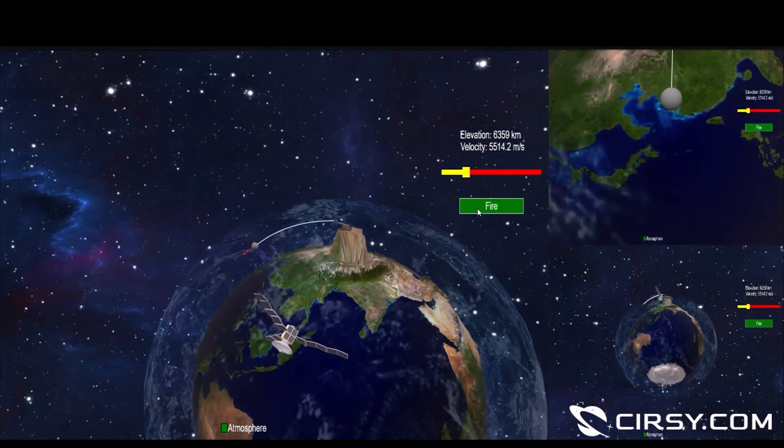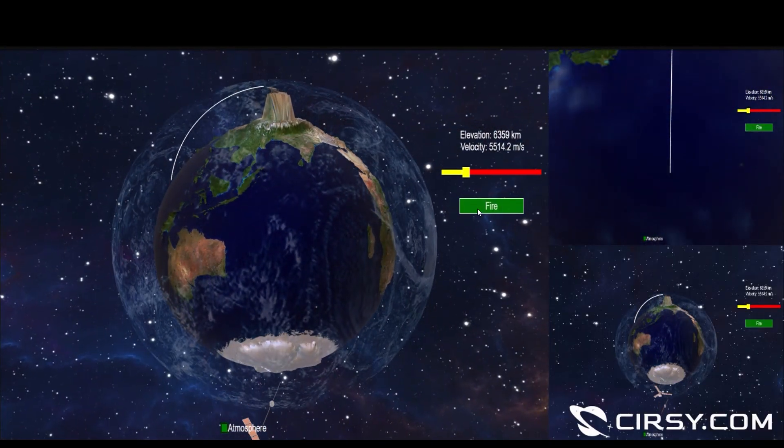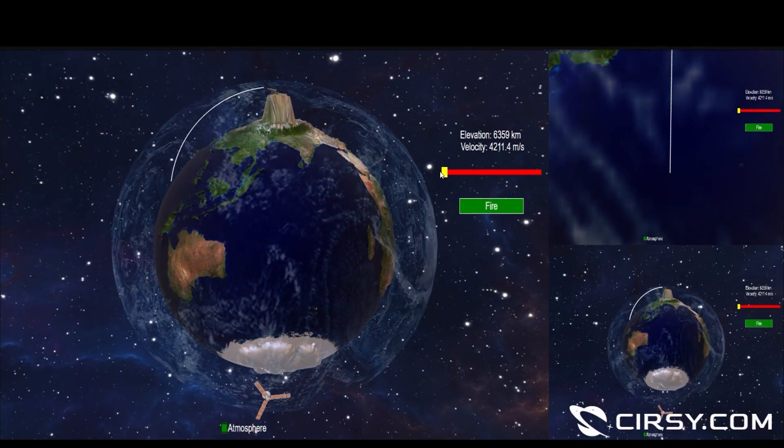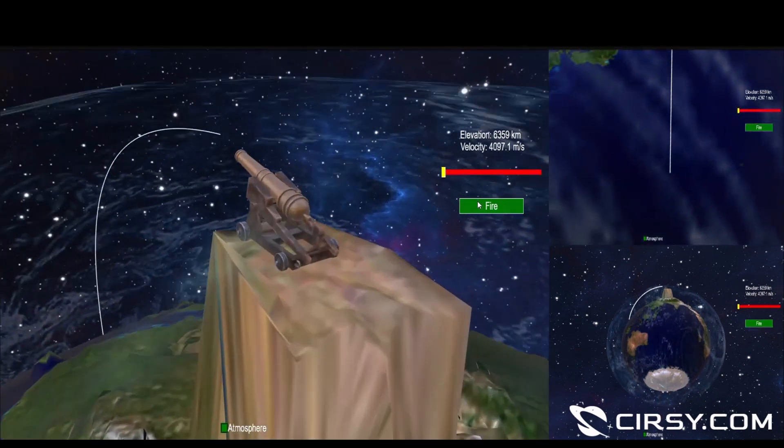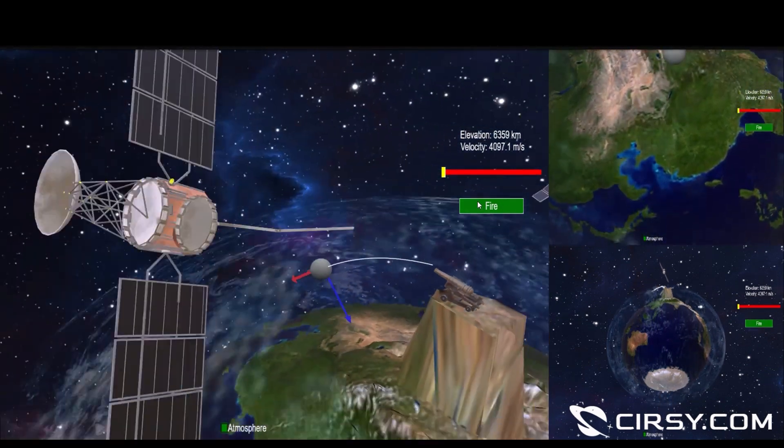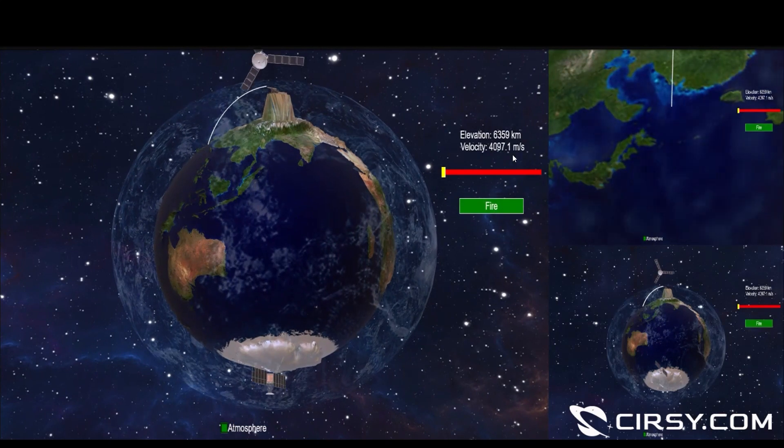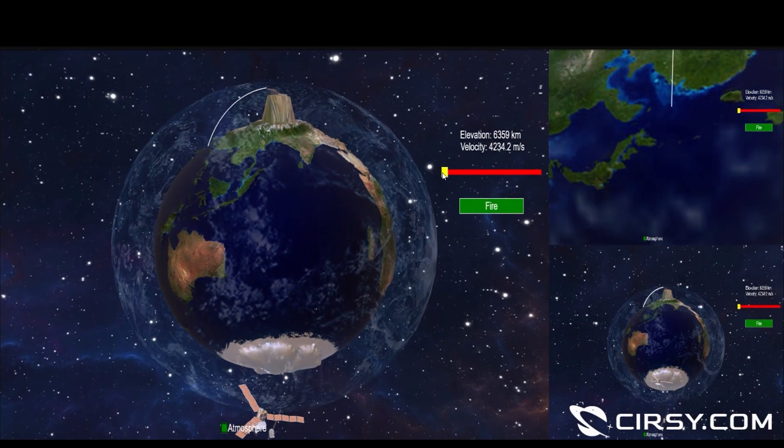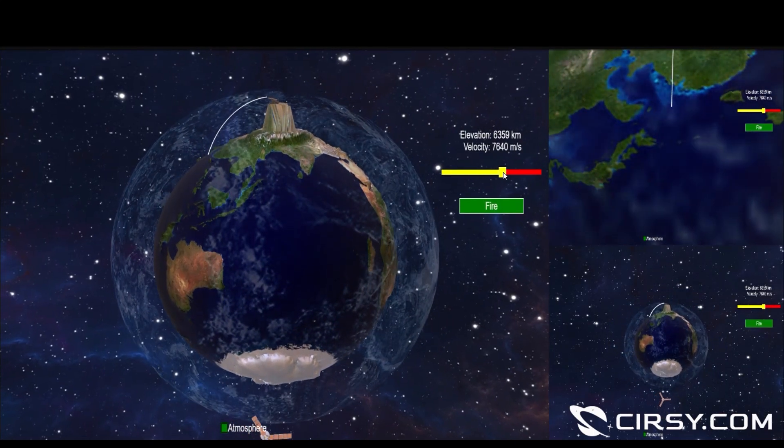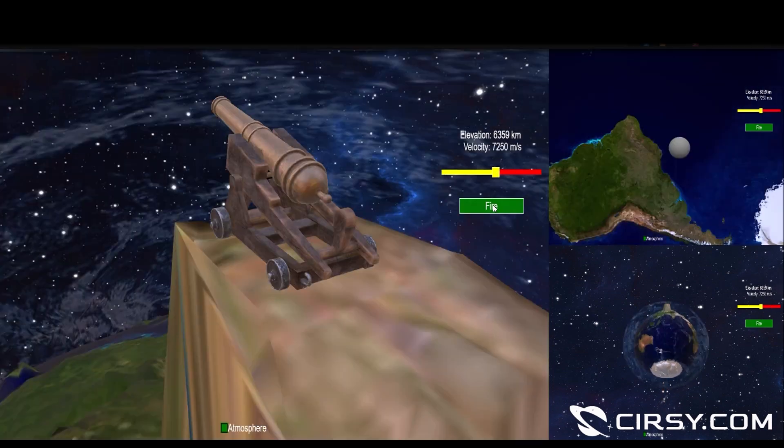What you see is Newton's mountain thought experiment. Earth gravity is causing the cannonball to fall towards its center but its initial horizontal velocity is moving it a certain distance before the gravitational acceleration is causing the cannonball to hit the ground.